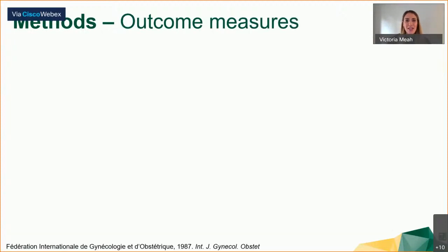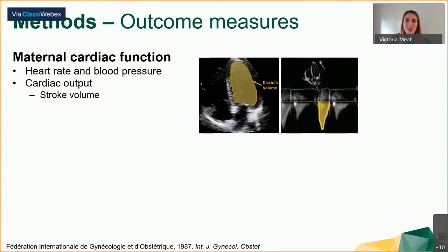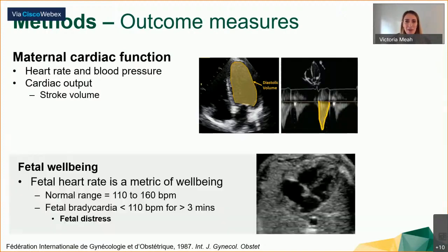Outcome measures included maternal heart rate and blood pressure, cardiac output, and stroke volume estimated using the area change from diastole to systole in the four-chamber view or the left ventricular outflow tract velocity time integral in the five-chamber view. To assess fetal well-being, we used fetal heart rate, where normal values should be between 110 and 160 beats per minute. A fetal heart rate below 110 beats per minute would indicate fetal distress or hypoxia — known as fetal bradycardia — which would be very concerning if identified post-exercise.